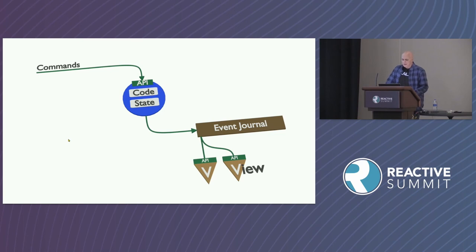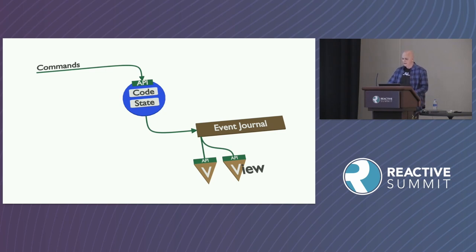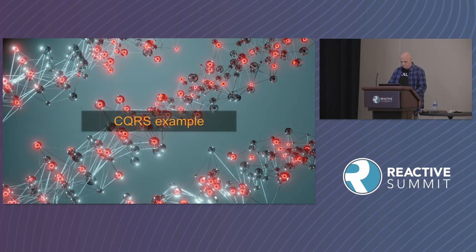In this abstraction layer there are three component types, which they call components. The first is an entity — event source entity, key-value entity, and replicated entity. You can think of them as objects with business logic and state within them. The second component is views — this is CQRS, Command Query Responsibility Segregation. The entity emits events written into an event journal, and views consume those events to update their data, making it an eventually consistent approach, which is classic event sourcing and CQRS.